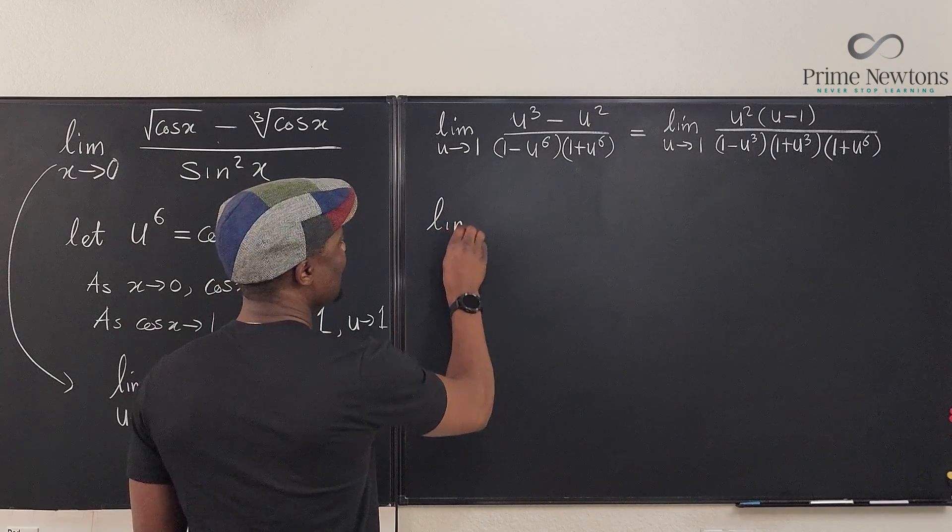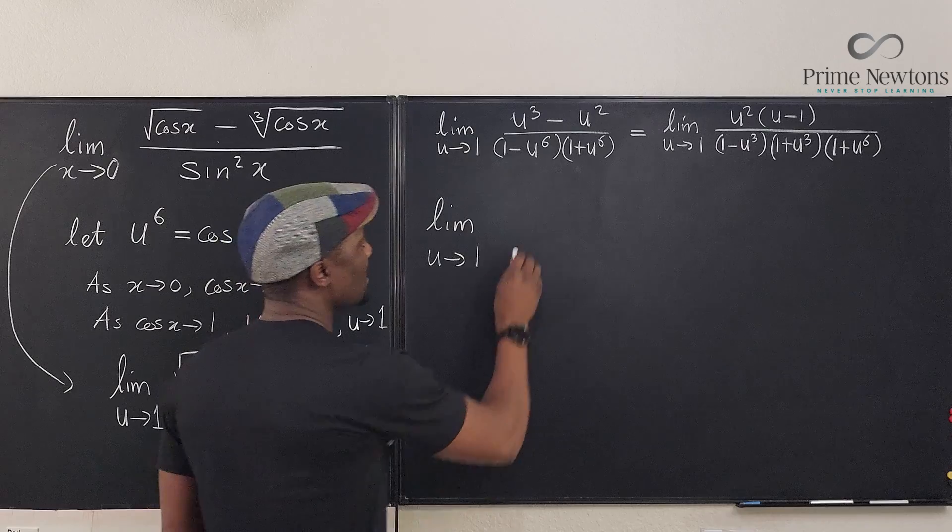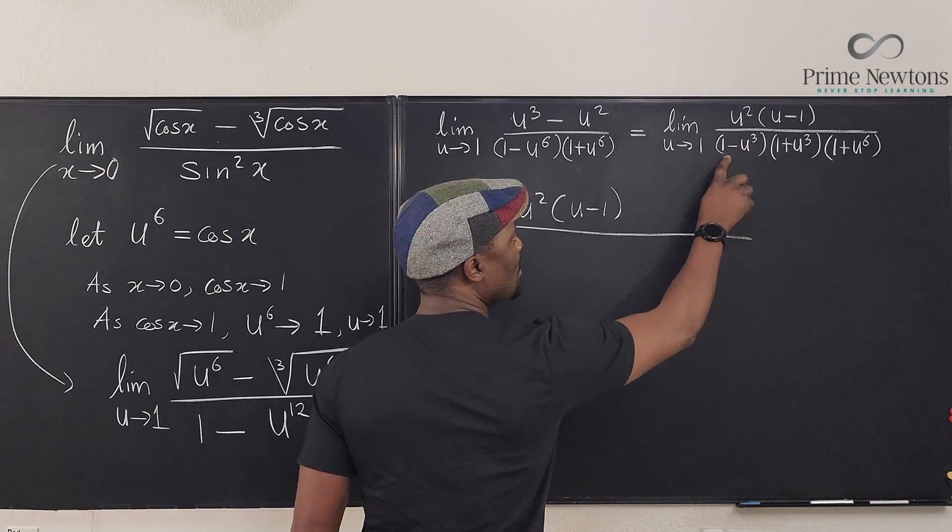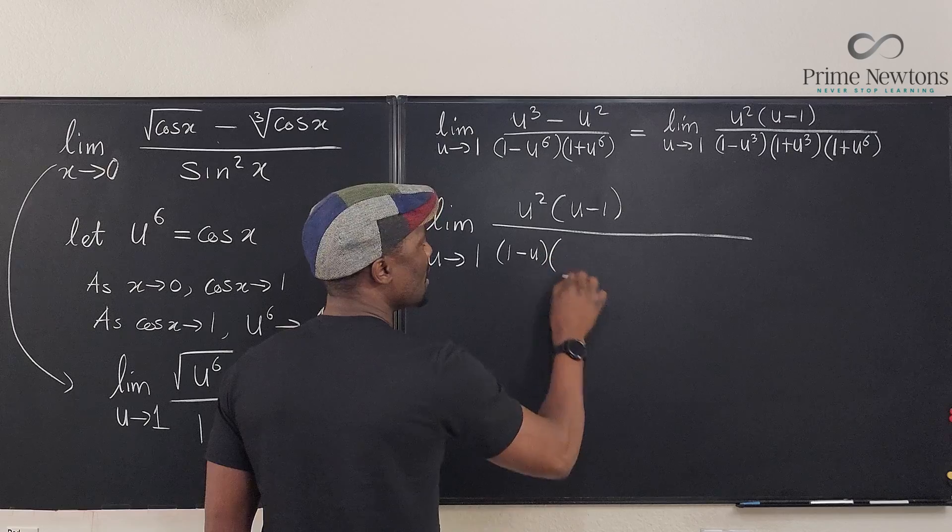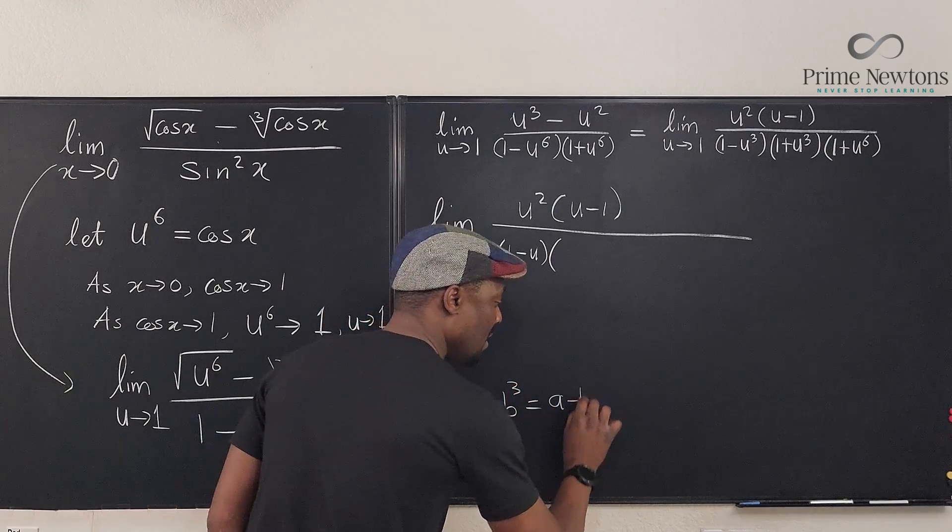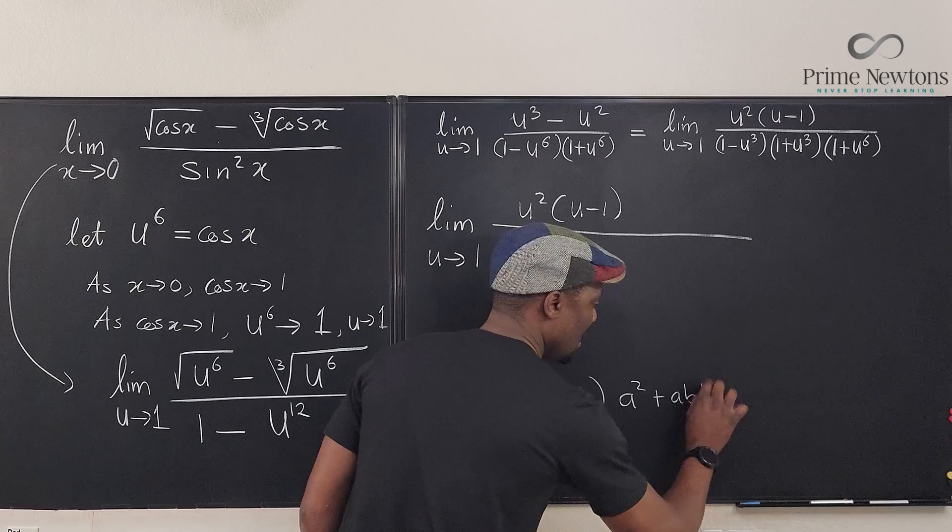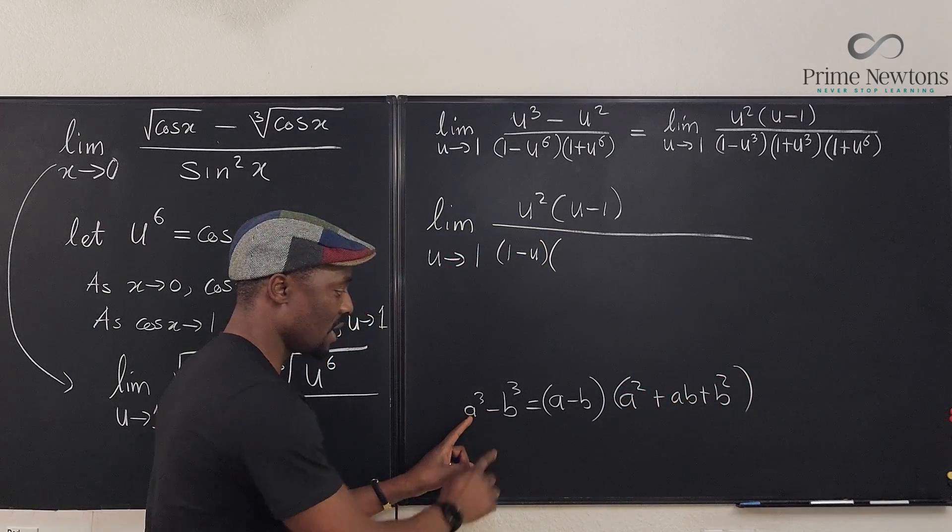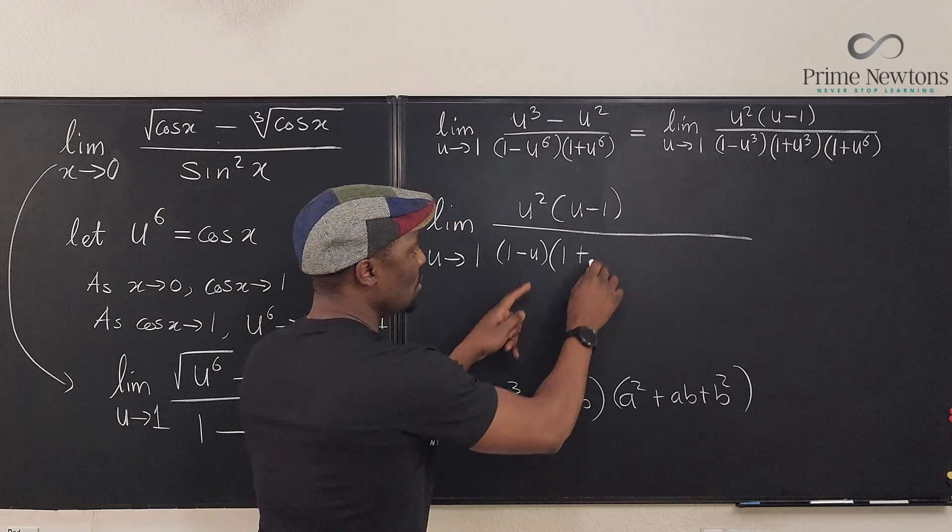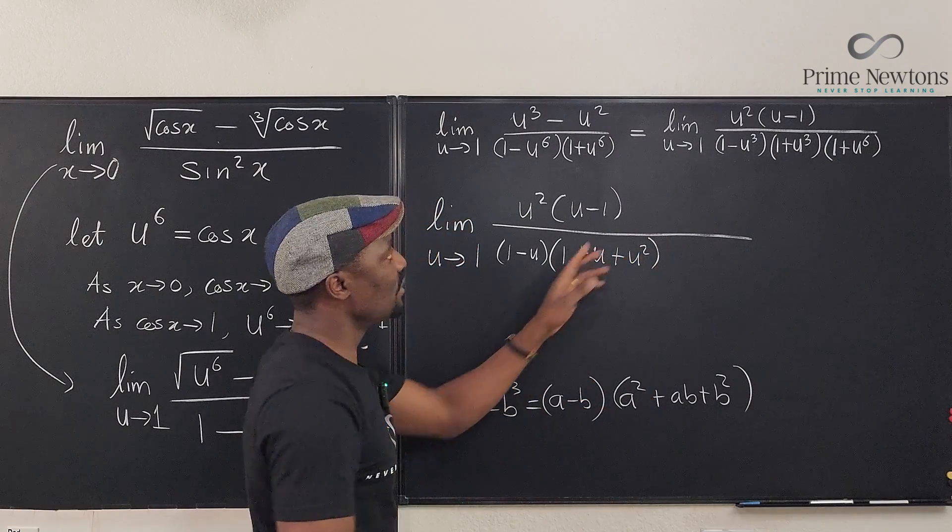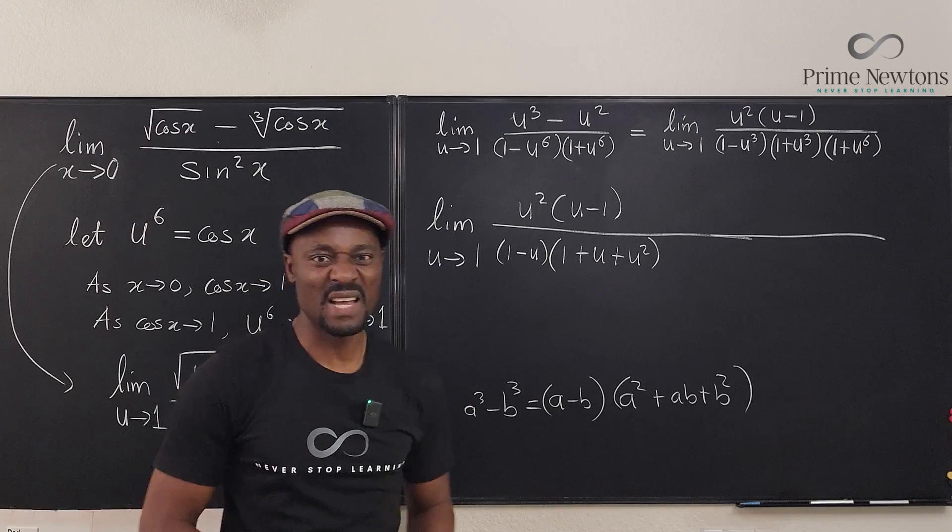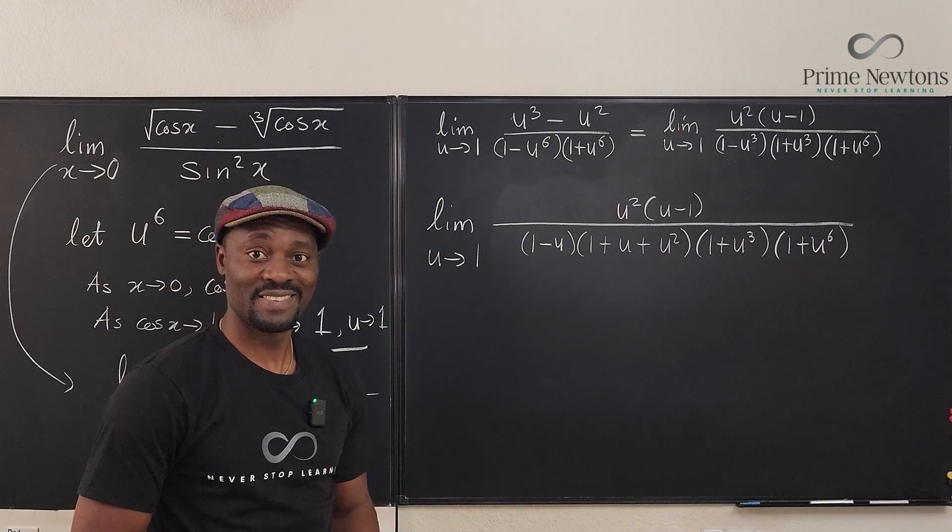So this is the same thing as the limit as u goes to one of the top is u squared into u minus one. And in the bottom, what do I have? I'm going to have the difference of two cubes, which is going to be one minus u times. You have to apply the formula for difference of two cubes. Remember that a cubed minus b cubed is equal to a minus b times a squared plus ab plus b squared. So in this case, our a is one or b is u. So if we apply that here, this is one minus u, and then it's going to be one squared plus one times u, which is u plus u squared. We have just taken care of this one. Now we need to copy this and paste. That's what the denominator is going to look like.